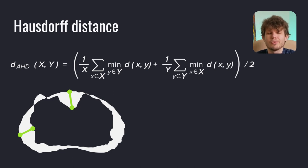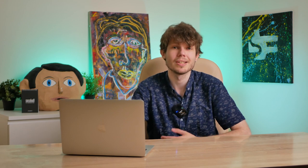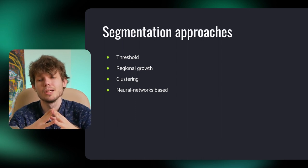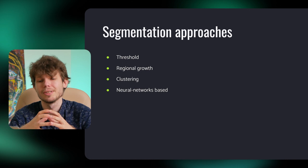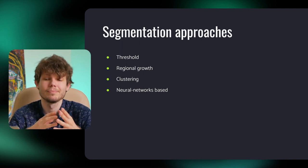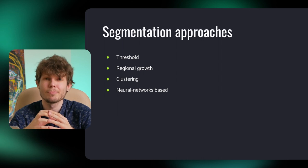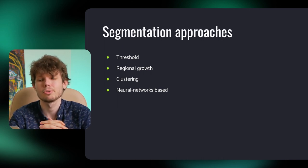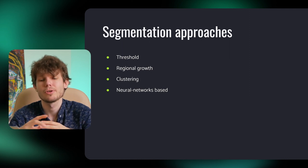Now that we have talked about metrics, let's move on to the segmentation algorithms themselves. We will talk about four types of segmentation techniques: threshold segmentation, regional growth segmentation, clustering segmentation, and neural network-based segmentation. The first three are classical and take root in the pre-neural network computer vision era. Although it might not sound inspiring, these techniques are still up to date — they require much less resources than modern neural networks and work pretty well in various applications.